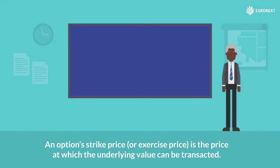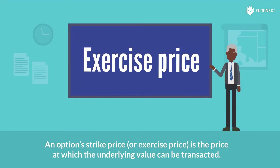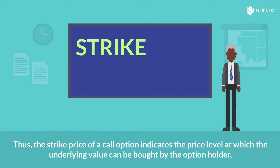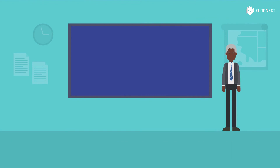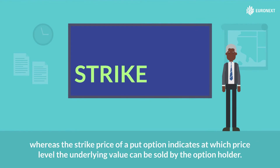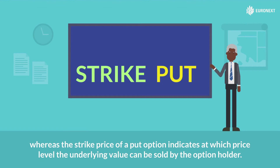An option's strike price, or exercise price, is the price at which the underlying value can be transacted. Thus, the strike price of a call option indicates the price level at which the underlying value can be bought by the option holder, whereas the strike price of a put option indicates at which price level the underlying value can be sold by the option holder.